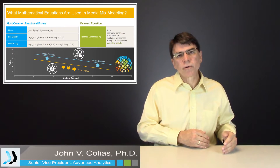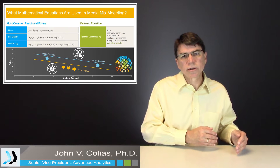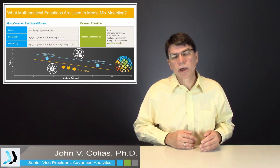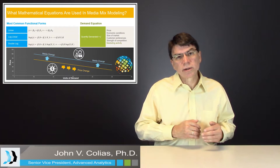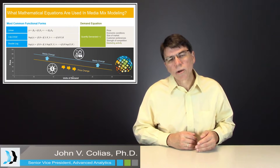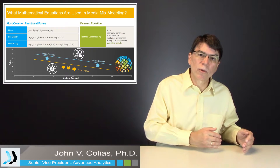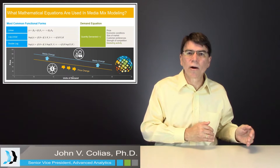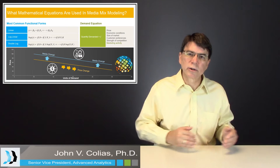With the double log function, it assumes that the percentage impact on unit sales of a given percent change in GRPs or any kind of media activity is the same. So a 10% increase in GRPs would cause a 10% change in demand, for example, regardless of where you are on the demand curve.